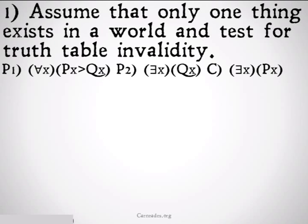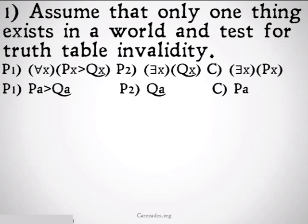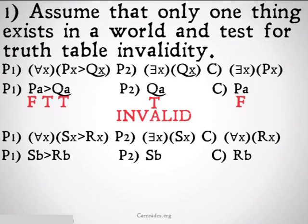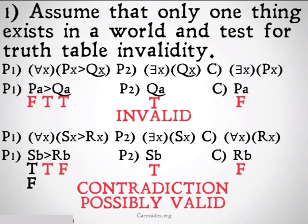Let's test this argument for invalidity: for all x, x being a P implies x is a Q; there exists some x such that x is a Q; therefore there exists an x such that x is a P. We simplify down to a finite universe where A is the only member and set up our truth table, assuming the premises are true and the conclusion is false. We will see that a certain predicate needs to be both true and false simultaneously — true to satisfy premise 2, but false to make premise 1 true — leading to a contradiction. So with one thing in the universe it's possibly valid, and we must move on.